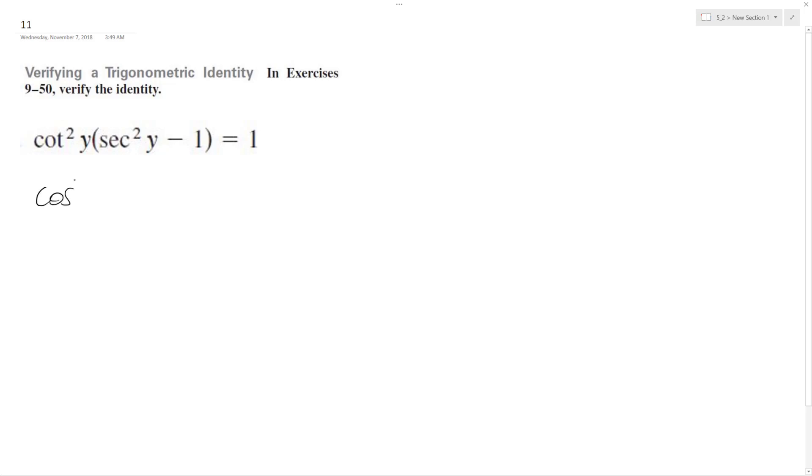Actually, I can probably break these down into simplest terms. So cotangent is the same thing as cosine over sine, and then secant is the same thing as 1 over cosine squared y minus 1 equals 1.